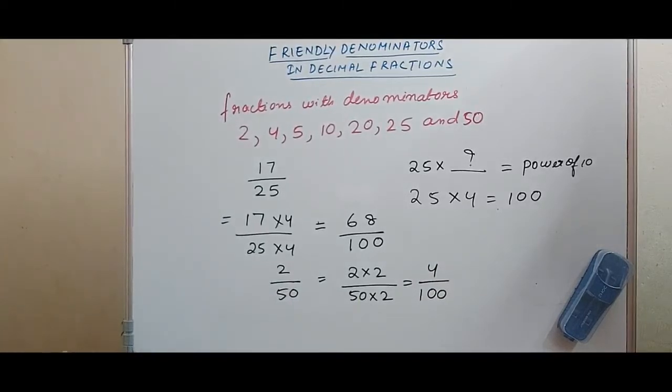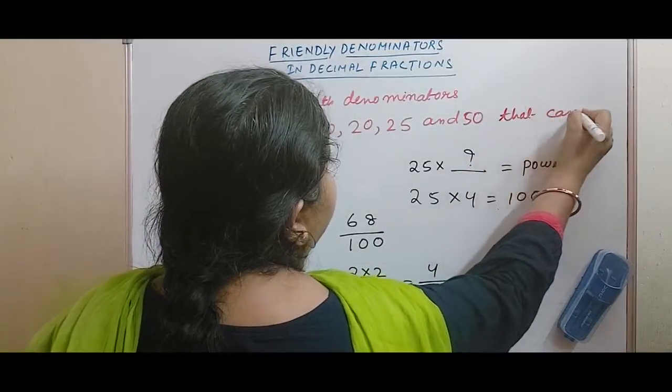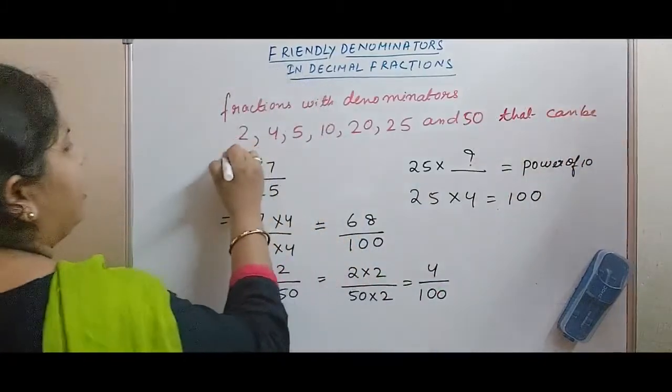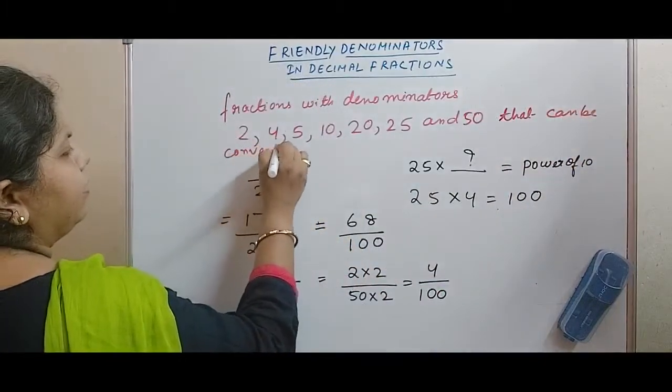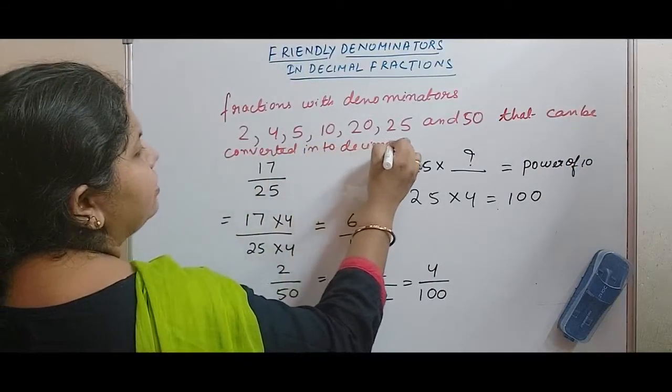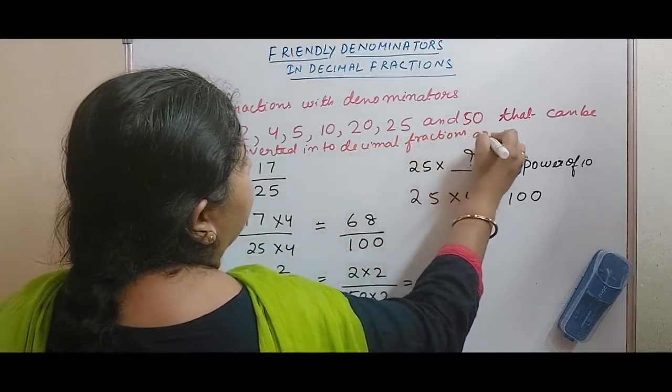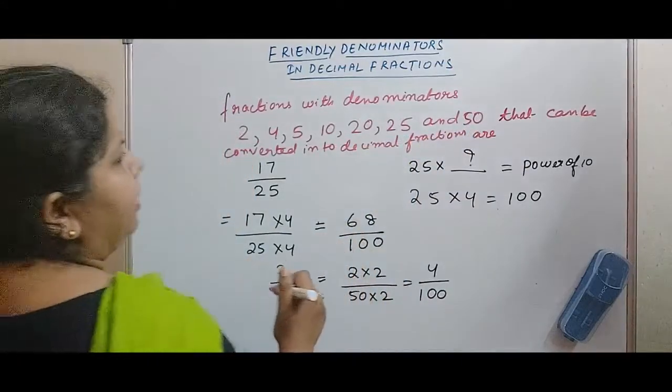So our definition for friendly denominators is: fractions with denominators 2, 4, 5, 10, 20, 25 and 50 that can be converted into decimal fractions. So decimal fractions are friendly denominators.